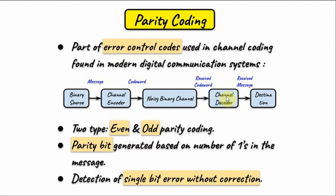The purpose of the channel decoder is to count the number of ones in the received codeword. If it is even, then no error has occurred and the message is extracted and fed into the destination. On the other hand, if the number of ones in the codeword is odd, then this implies a single error has occurred, but the channel decoder can't determine which bit is in error, so it will ask the transmitter to retransmit the codeword. Keep in mind that the code will fail if there are two or more errors. The detection capability of this parity bit coding is single bit error without correction.